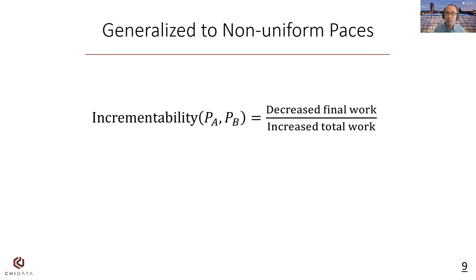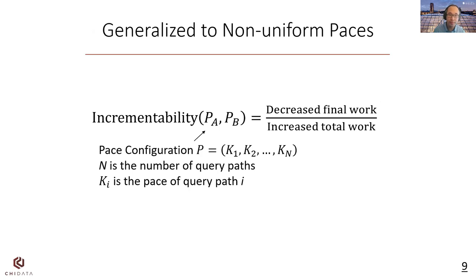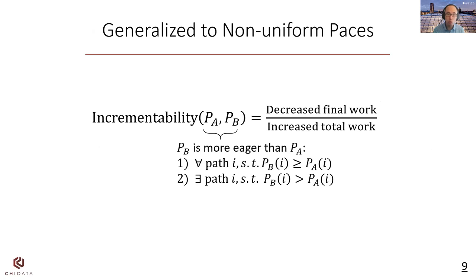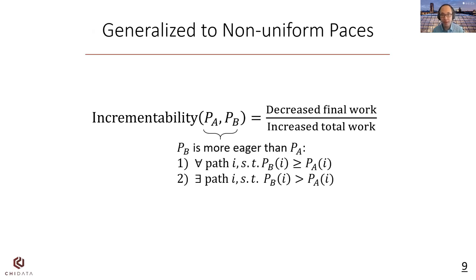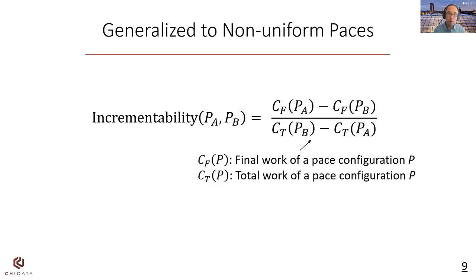Let's look at the definition of incrementability between two pace configurations. One pace configuration includes all paces for all query paths. We require pace configuration B to be more eager than pace configuration A, which means for any pace in PB, it should be no smaller than the corresponding pace in PA, and there is at least one pace in PB that is larger than the pace in PA. With that, we use our cost model to compute the incrementability.